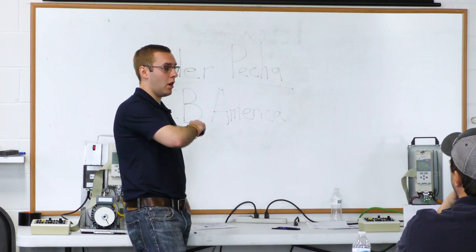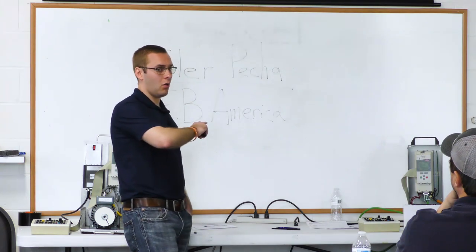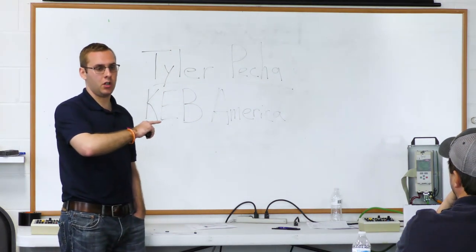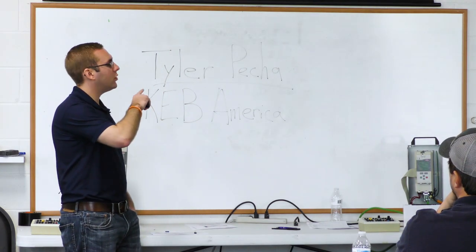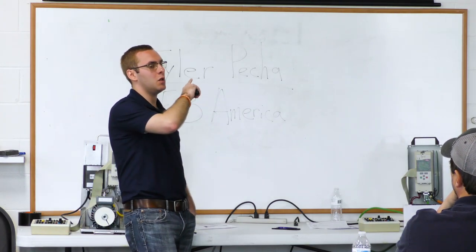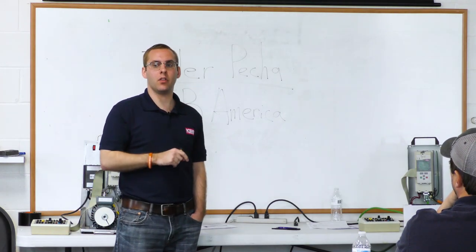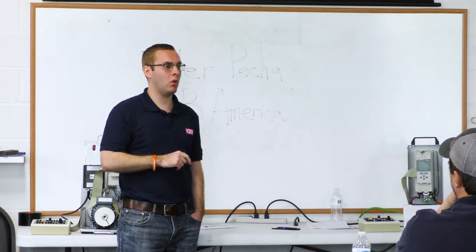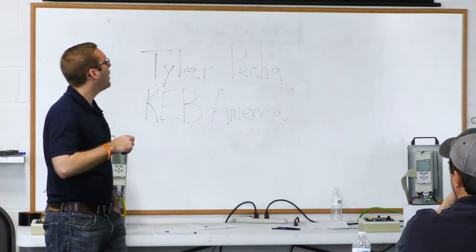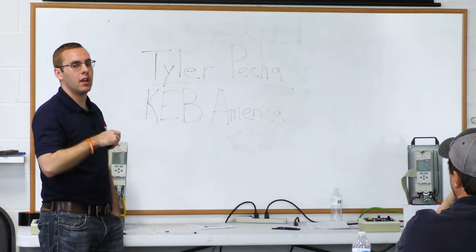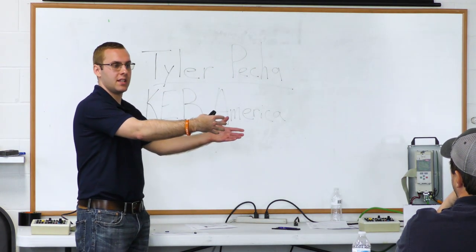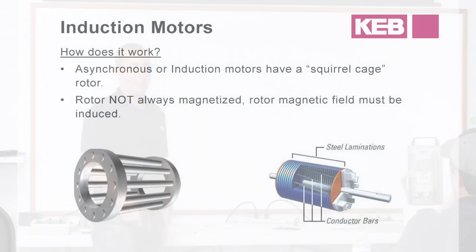This is where the encoder learn procedure comes in — what we're doing there is getting the position of the rotor in relation to one of the motor poles, so that we know exactly which angle we can put the stator magnetic field out at.